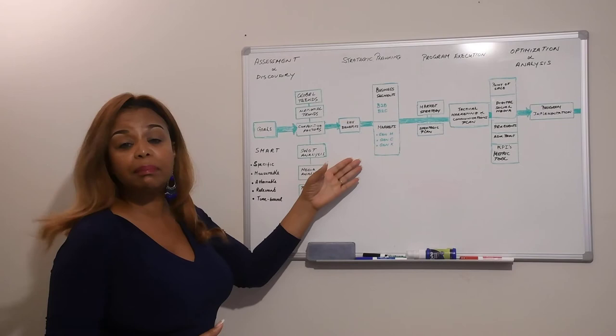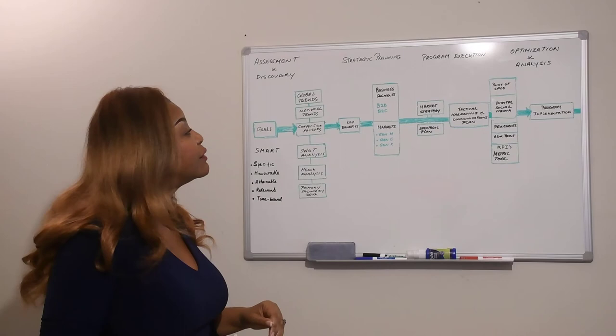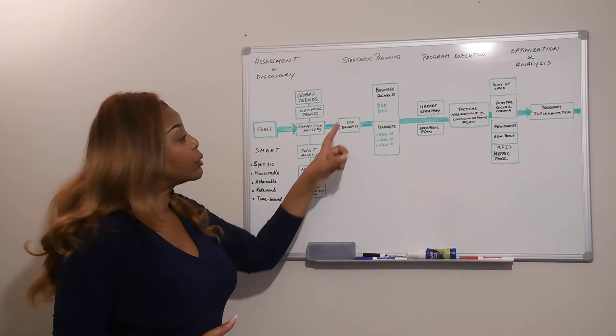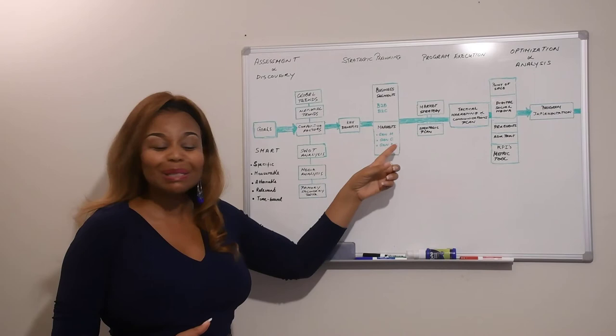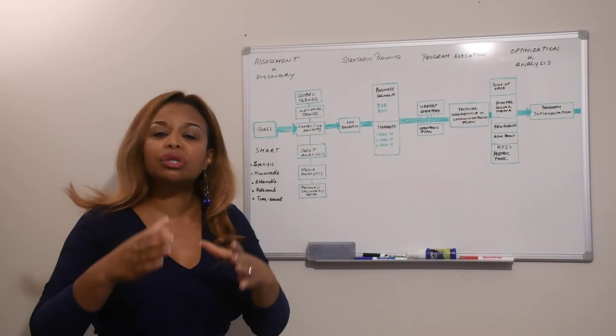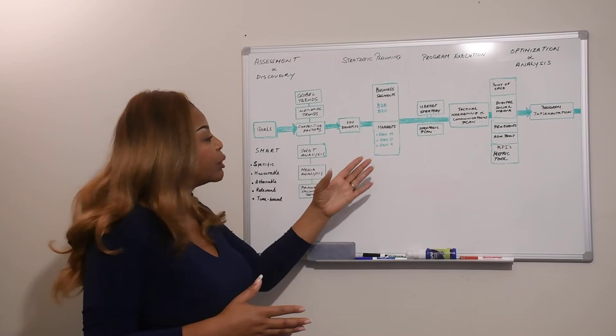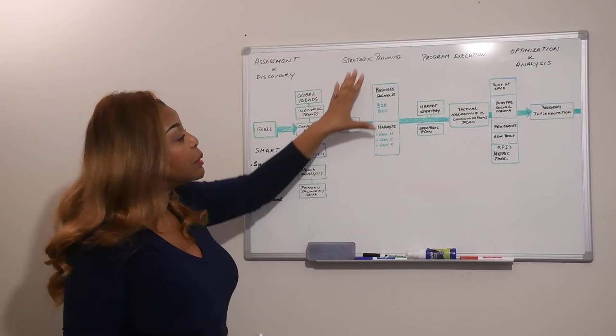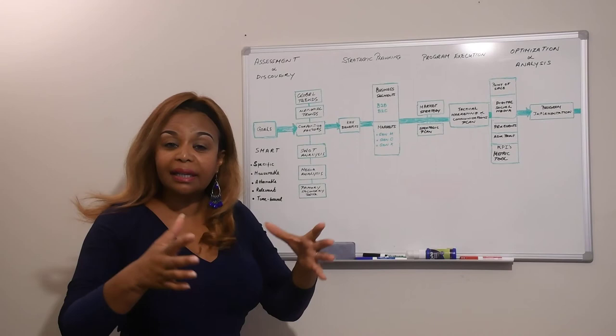In the strategic planning phase, this allows you to start looking at the various business segments, whether it's business to business or the B to C space. Take a look at your markets. Really focus on who your target audiences are, whether you're looking at Generation X, the Millennials, or whether you're looking at a more senior audience or a younger audience. This is the part of the process that really begins to narrow the focus on the markets and on your type of customers.